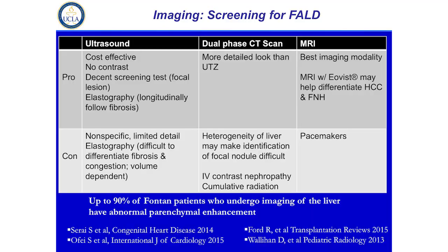The three imaging modalities from a liver standpoint include ultrasound, CT scan, and MRI. The pros and cons are shown here. Obviously ultrasound is noninvasive and cost-effective. We've tried to use elastography as a screening tool, but in general, elastography in a good portion of these patients tends to over-call the degree of fibrosis that they may have. It's also very volume-dependent, so you can see variability based on what time of day the ultrasound is done or if it's done with clinical or diuretic changes. CT obviously gives us a more detailed look, and our prior speaker highlighted risks of long-term CT radiation exposure and contrast exposure.